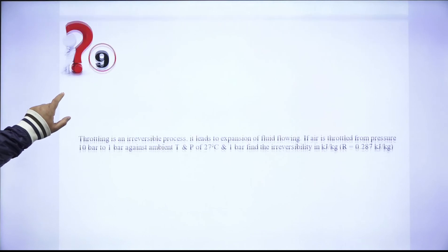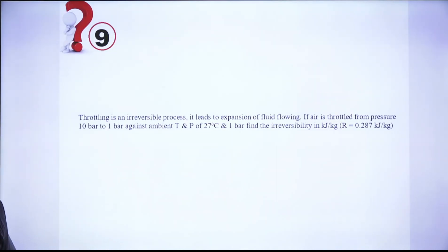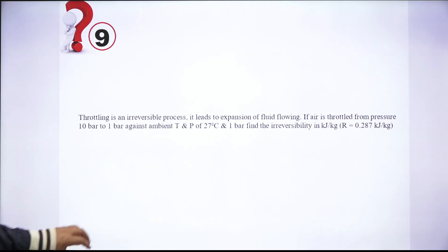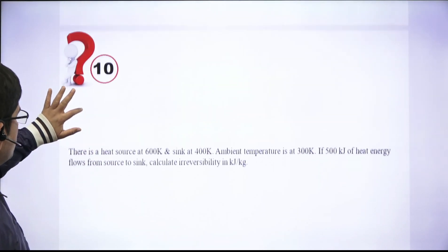Question 9: Free expansion is a constant internal energy process; throttling is a constant enthalpy process — both are irreversible. Air is throttled from p1 = 10 bar to p2 = 1 bar. The ambient temperature and pressure are given. Calculate the irreversibility of the throttling process.